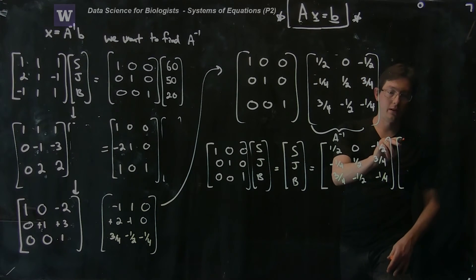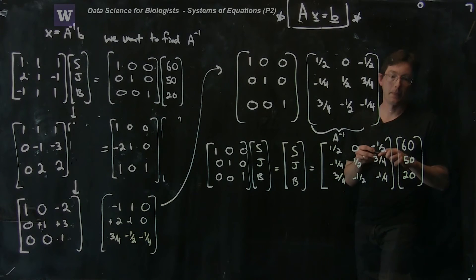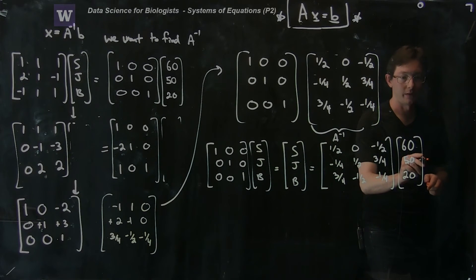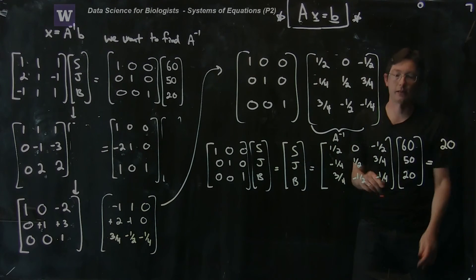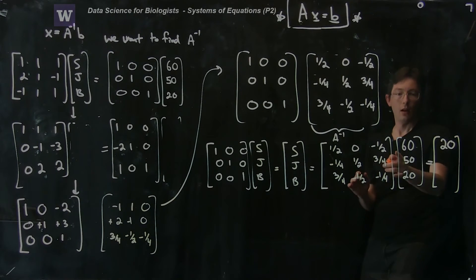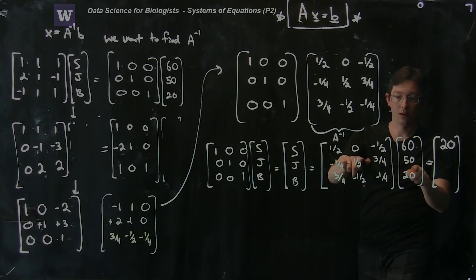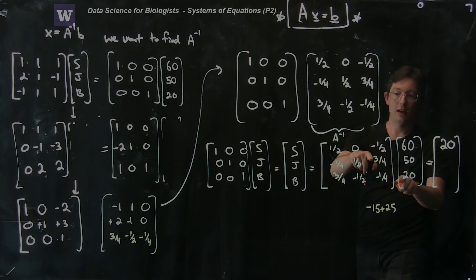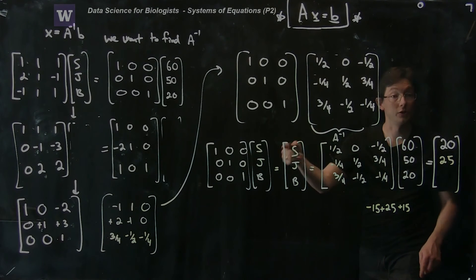We're going to multiply A inverse by our B vector 60, 50, 20. For Sally: one-half of 60 minus one-half of 20 is 30 minus 10, which equals 20. Sally is 20. For John: minus one-quarter of 60 plus one-half of 50 plus three-quarters of 20 is minus 15 plus 25 plus 15 — the 15s cancel and we get 25. John is 25 years old.